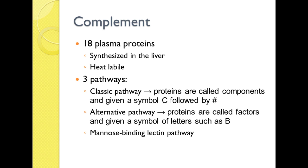So what is complement? It consists of 18 plasma proteins that are synthesized in the liver. They are heat labile. There are three pathways by which complement can begin: the classical pathway, the alternative pathway, and the mannose binding lectin pathway. I'm going to run you through each of the three of those today.